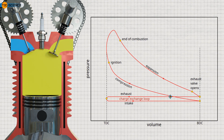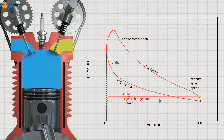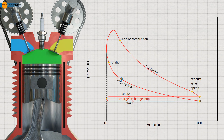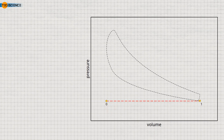The auto cycle just explained is mathematically difficult to describe. Therefore, the thermodynamic processes in an auto engine are often considered under idealized conditions — this is called the ideal auto cycle. In such an ideal cycle, it is first assumed that the intake and exhaust processes occur at the same pressure. In the simplest case, this pressure corresponds to the ambient pressure, unless the intake manifold pressure is increased by a compressor to deliver more air mass to the engine. As a result, no work is required for the intake and exhaust of gases, and therefore there is no charge-exchange loop in the diagram.